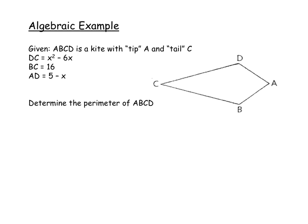As a last example, we'll apply one of the definitions to an algebraic problem. ABCD is a kite with tip A and tail C. That means one pair of congruent sides meets at A — so DA and BA are congruent — and the other pair meets at C — so BC and DC are congruent. We're given that DC equals x² − 6x, BC equals 16, and AD equals 5 − x. We're asked to find the perimeter of ABCD, which means we'll need to find x first using the definition of a kite.